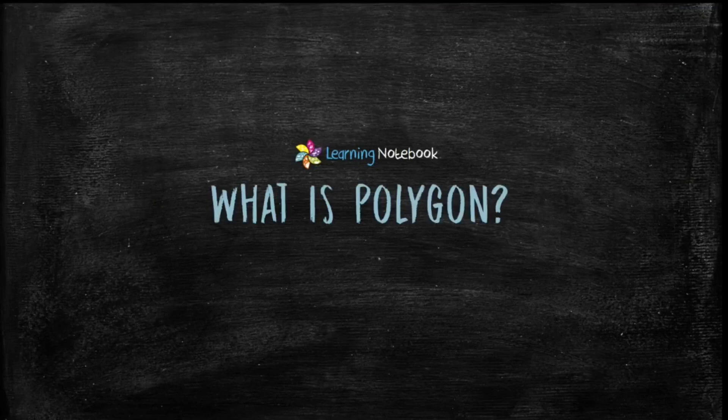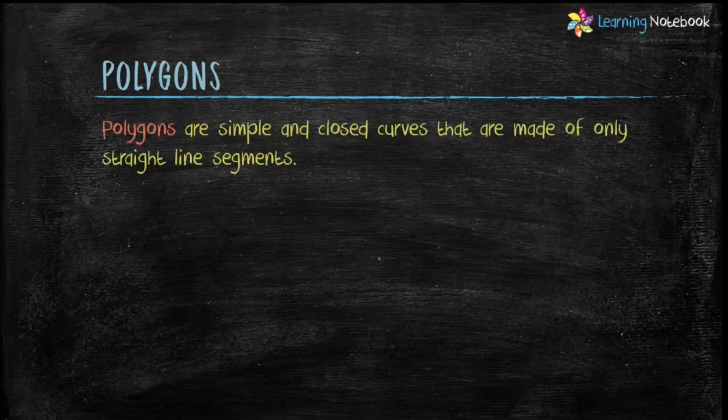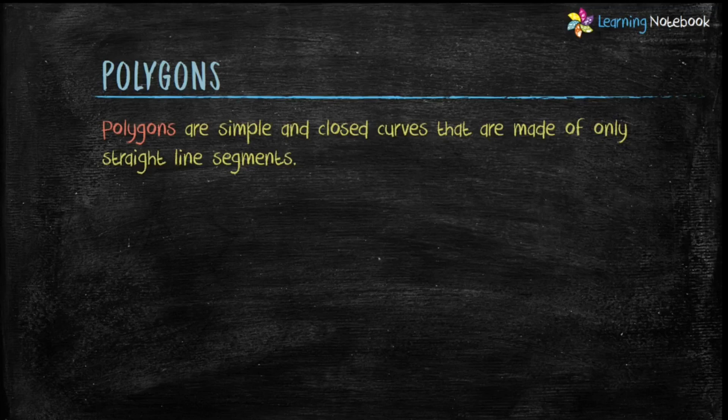Now, let's see what is polygon. Polygons are simple and closed curves that are made of only straight line segments. Let's see few examples to understand polygons.